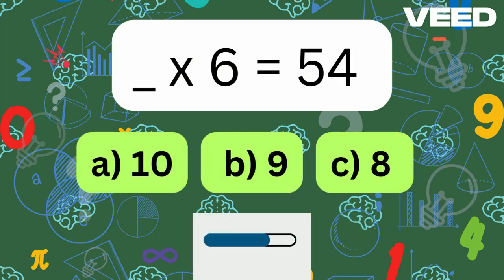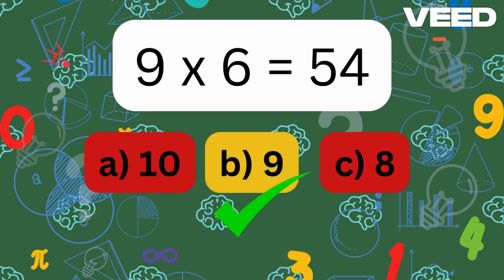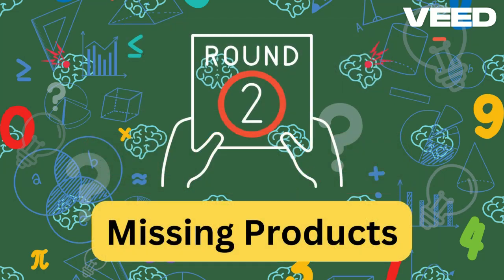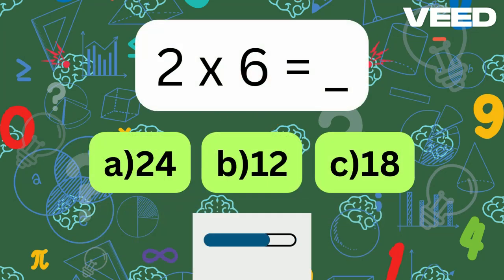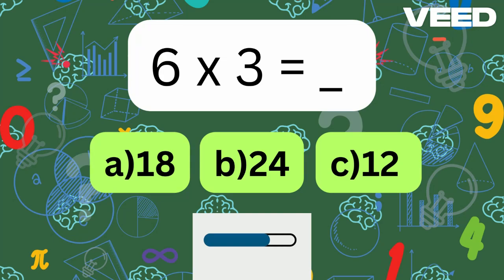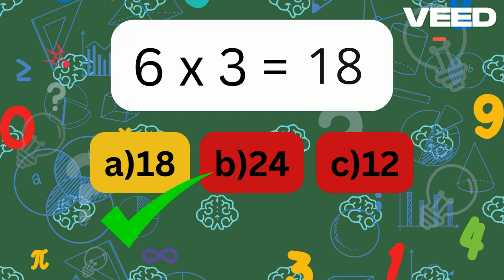What times 6 is 54? 9x6 is equal to 54. 6 times 3 is 18.